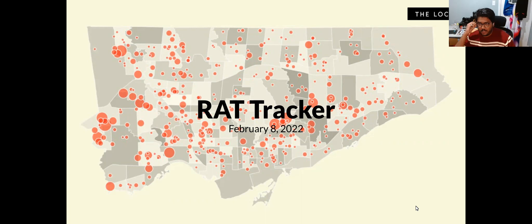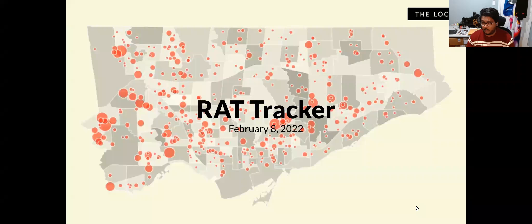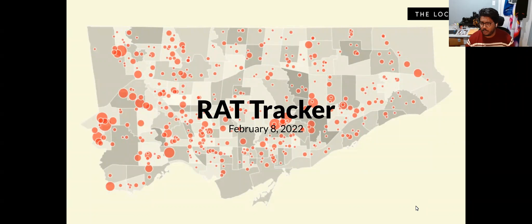The Rat Tracker — what we're referring to is the Rapid Antigen Test Tracker. This is an initiative that The Local started at the beginning of the year. Today I'll give you an explanation of why we started it, some background leading up to it, a little bit of the tech, and some of the results and analysis.